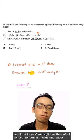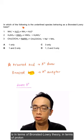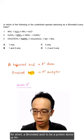Now for A-level chemistry syllabus, the default concept for defining acids and bases is in terms of Bronsted-Lowry theory, in terms of proton transfer or H-plus transfer. Usually we will just call this Bronsted Acid for short.